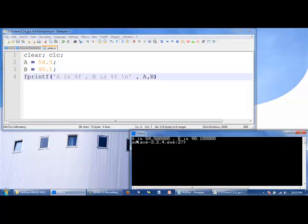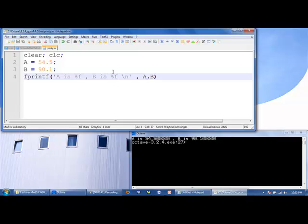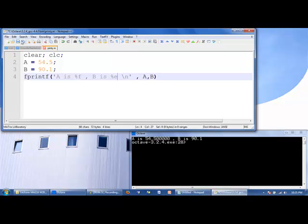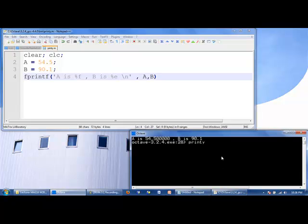So let's see what happens when we run this code. We see that a is 54.5, b is 90.1. If we want to get rid of these annoying trailing zeros, we can do so. Let's just do it for b only, and you can see those zeros are gone. If you want to express b using scientific notation, you can. And it would look like that.